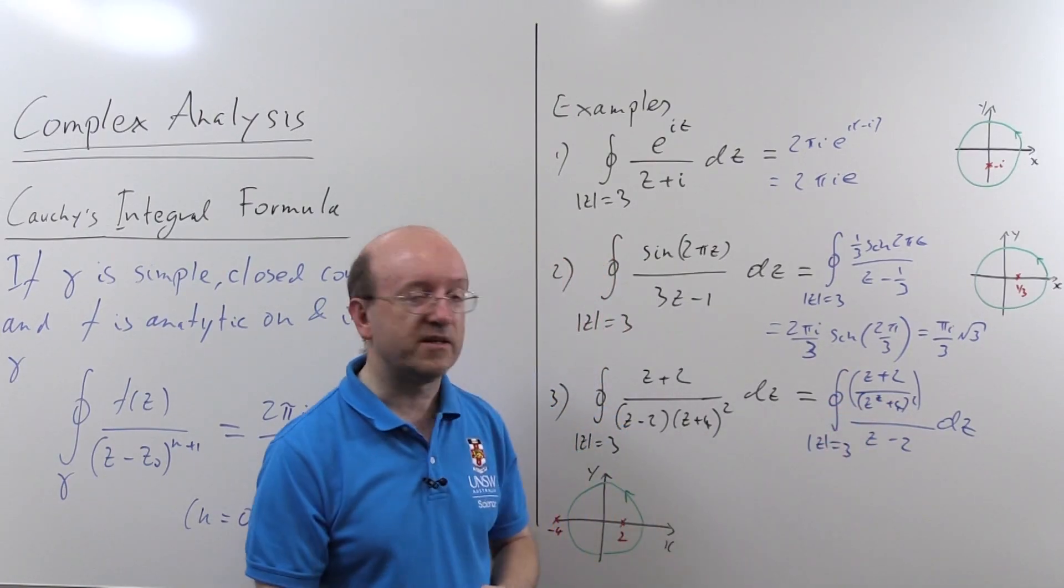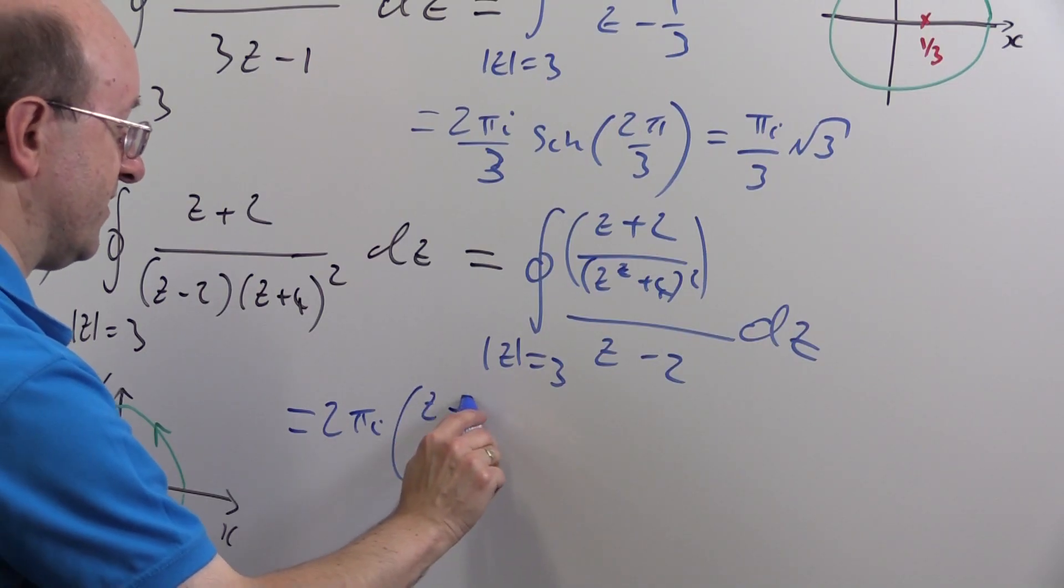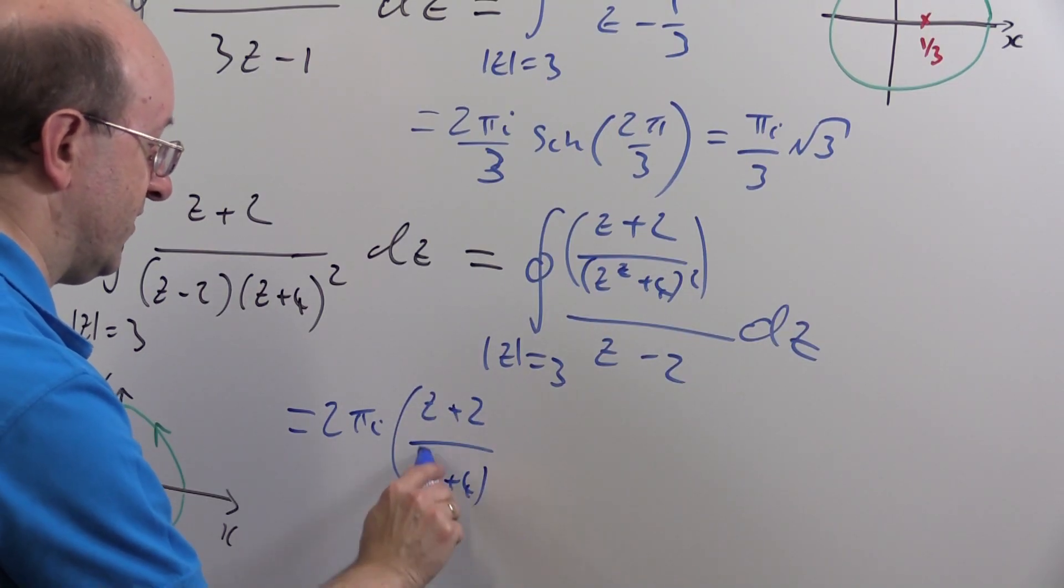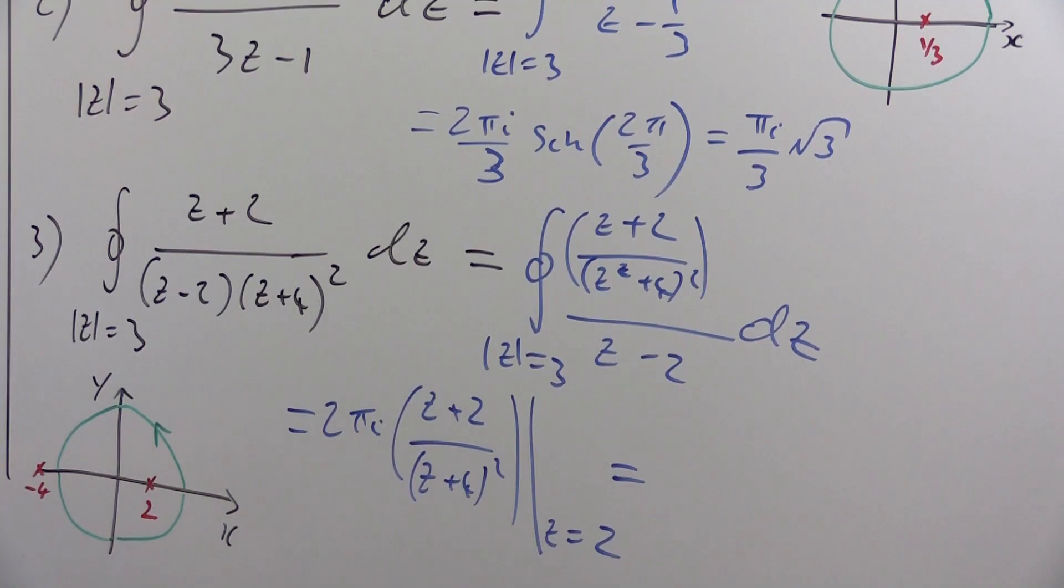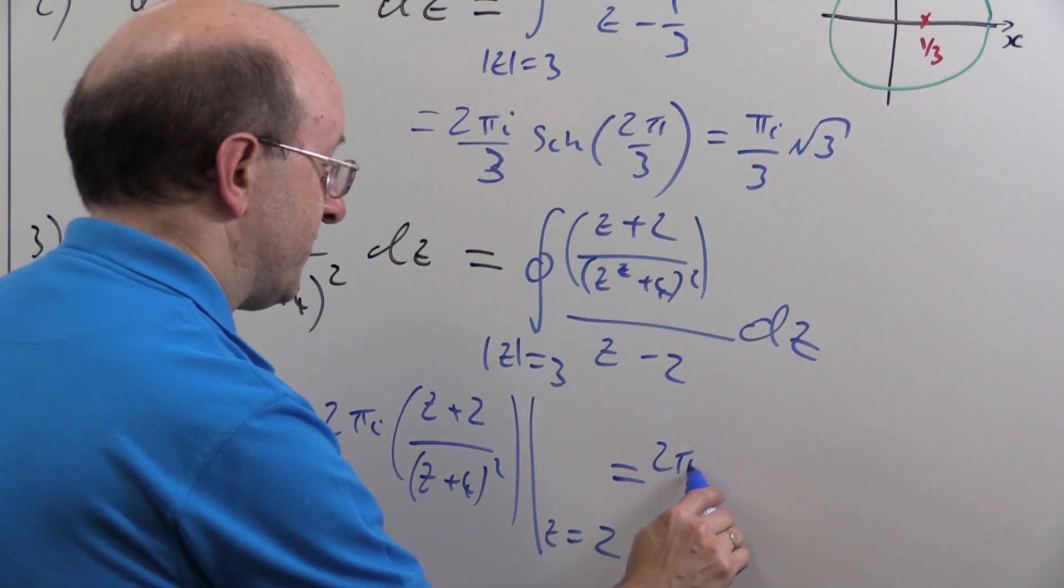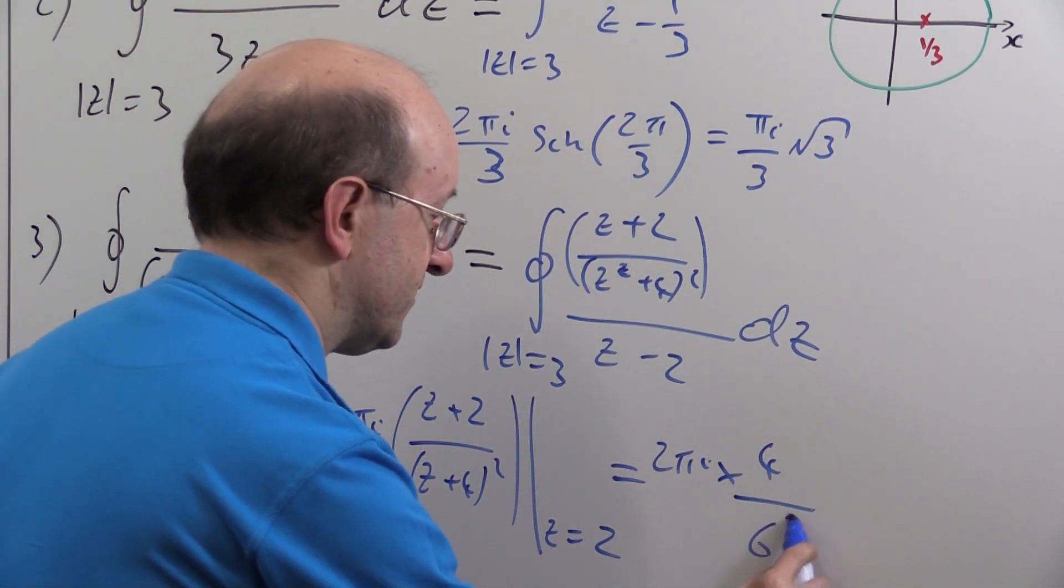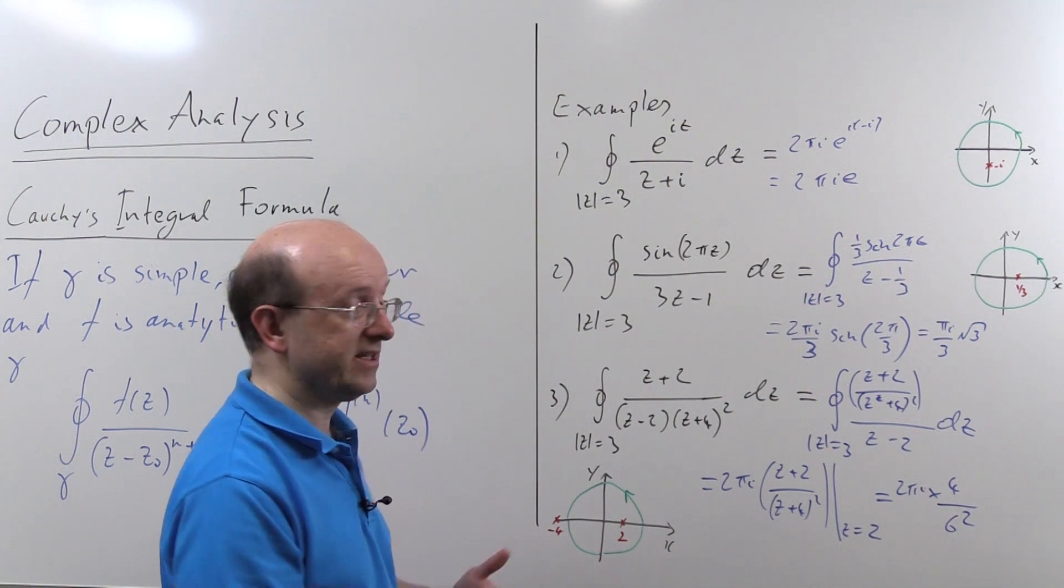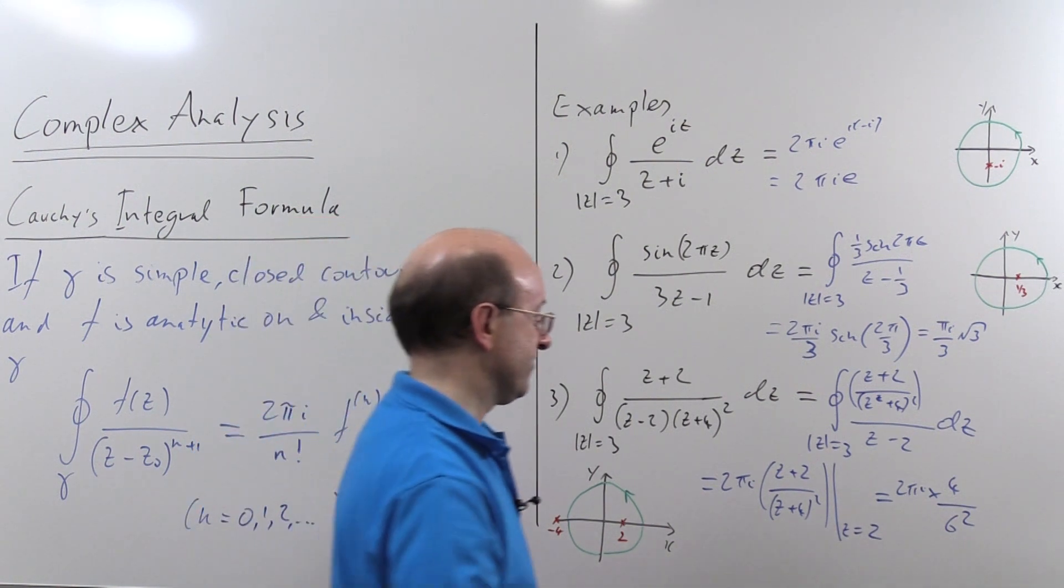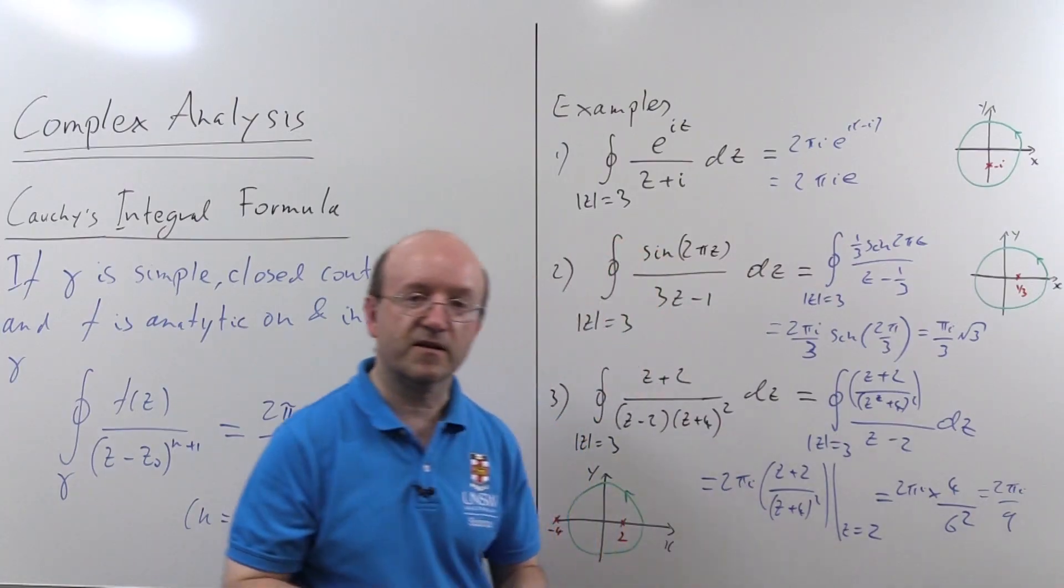So all we have to do is evaluate this function at 2 multiplied by 2 pi i. So it's 2 pi i times, well, let me write it out, z plus 2 over z plus 4 squared evaluated at z equals 2, which is 2 pi i times, well, 4 over 2 plus 4 is 6 squared. That's 4 over 36, which is 1 over 9, so it's 2 pi i on 9. And that's my answer.